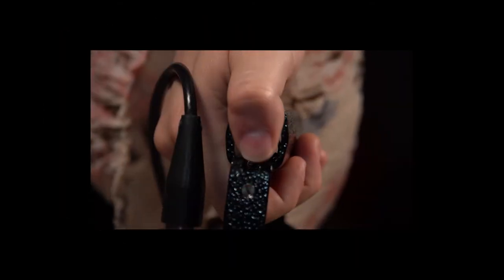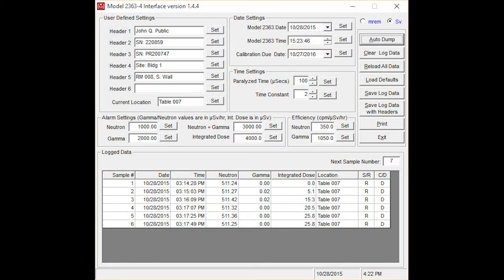The Model 2363 can log up to 1,000 data points in non-volatile memory. Each data point consists of the sample number, a date-time stamp, rate meter measurements of both neutron and gamma, and integrated dose measurements of both neutron and gamma.